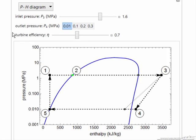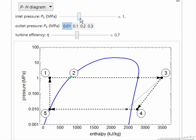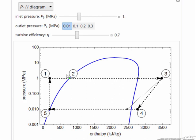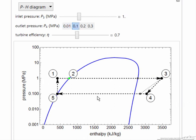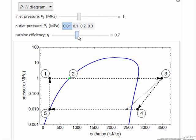So we are looking at the pressure enthalpy diagram for this Rankine cycle, and we can change the inlet pressure, and you notice that corresponds to conditions one, two, and three, inlet pressure to the turbine. We can change the outlet pressure, that's pressure four and five, and then we can change the efficiency. So let's make it easier to see the efficiency change.